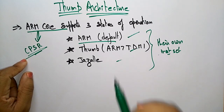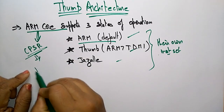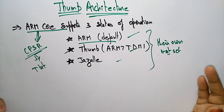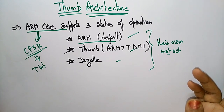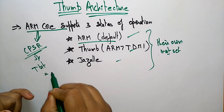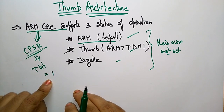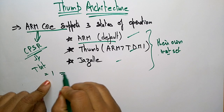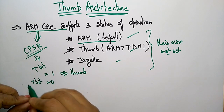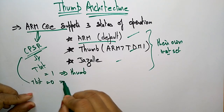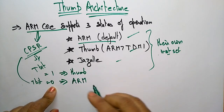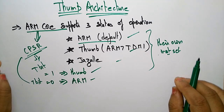In the CPSR you have a T-bit. The CPSR is a 32-bit instruction, and in that instruction one of the bits is the T-bit. If the T-bit in CPSR is 1, then the mode of operation is referred to as Thumb. When the T-bit is 0 in CPSR, then the mode of operation ARM is selected. T-bit is 0 means ARM is selected; if T-bit is set then Thumb will be selected.